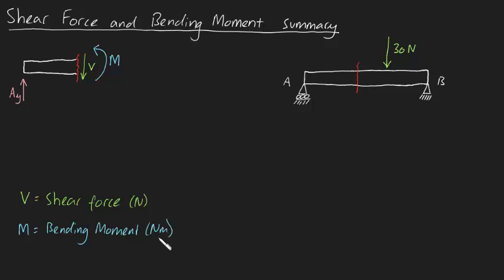Notice how standard convention is to assume that for cut sections from left to right, like this one, V is positive downwards, and M is positive counterclockwise.